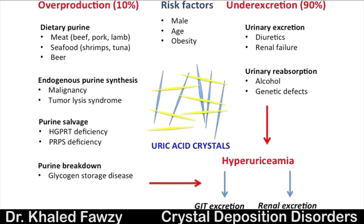If you have a malignancy or hematological disorder with breakdown of cells, this produces excessive purines. Chemotherapy similarly causes cells to break down, producing purines and uric acid. Enzymatic deficiencies and glycogen storage disease are also causes. Risk factors include being male, old in age, and obese, plus alcohol, hypertension, and diabetes.